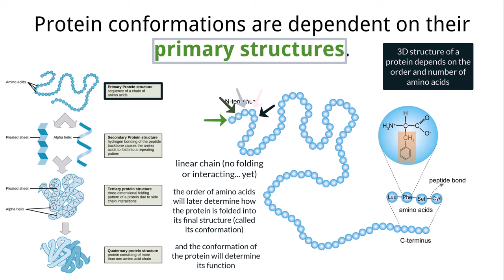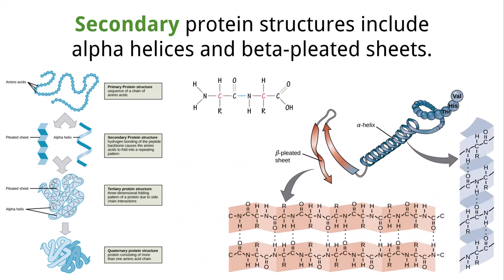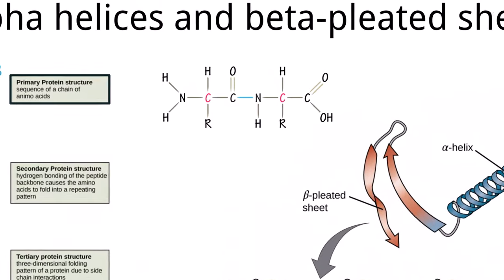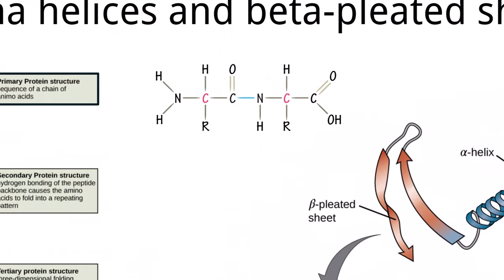Let's talk about the next few levels of protein organization to see what types of conformational patterns are seen within protein folding. The primary structure of a protein involves many amino acids connected by peptide bonds. As we saw in the last video, a peptide bond removes a water molecule via the condensation of the carboxyl and amine groups.